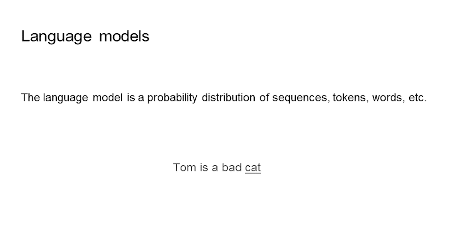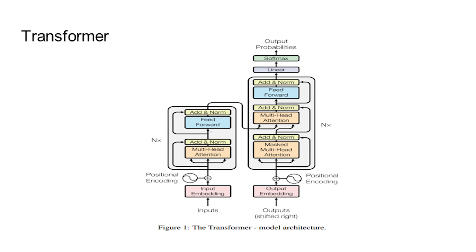A language model is a probability distribution over sequences of tokens or words. For example, given 'Tom is a bat,' what is the probability of the next word — is it a cat, a dog, a person? Transformers are one such architecture that aims to solve sequence-to-sequence tasks using an attention mechanism, where self-attention is computed for each word. It has two parts: an encoder that transforms input into high-dimensional embeddings, and a decoder that produces output sequences from those embeddings.